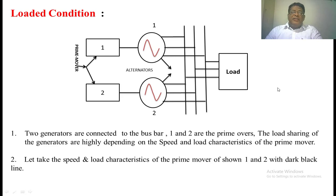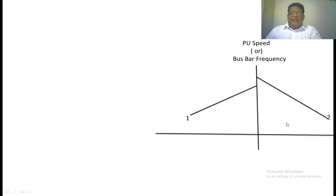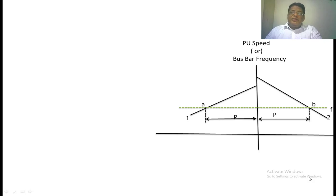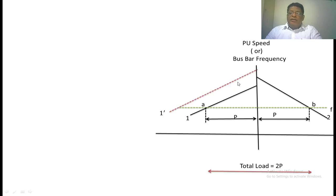We have taken the characteristics of prime mover 1 and prime mover 2, shown as dotted lines. The first dotted line is the characteristic of prime mover 1, the second is for prime mover 2. The total power is taken by the load. Drawing a horizontal dotted line, it intersects the first characteristic at point A and the second characteristic at point Z. The power supplied by the first generator equals the power supplied by the second generator, and the frequency is F. When we increase the mechanical input of the first generator, its characteristic shifts upward, shown with a red dotted line.